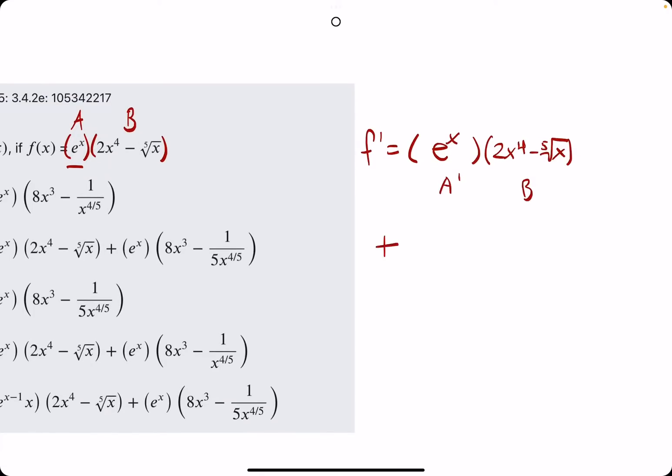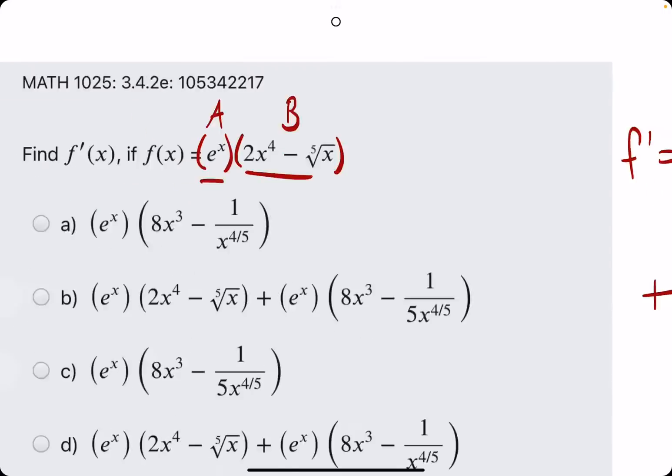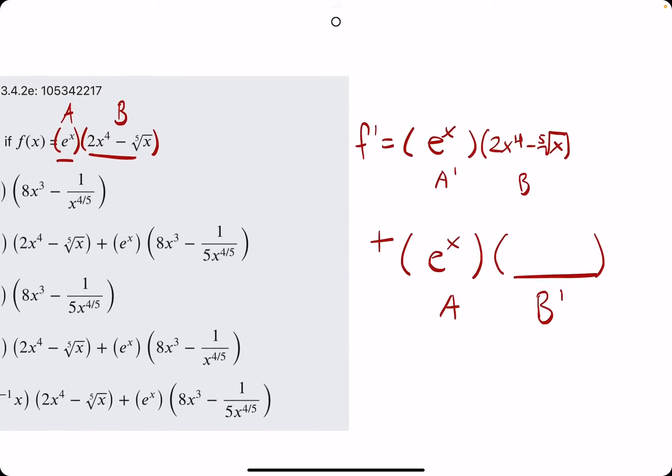Then, we want to add A times B prime. A is the original e to the x. Then, where we have B prime, we want the derivative of B. So, starting with 2x to the 4th, that has a derivative of 8x to the 3rd. And then the minus 5th root of x is equivalent to minus x to the 1/5th. The 5th root corresponding to a 1/5th.